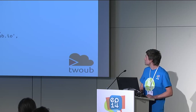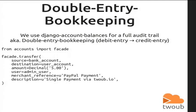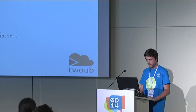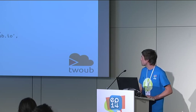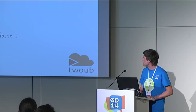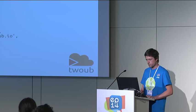Another useful component is double-entry bookkeeping: Django account balances. You have a full audit trail. You always have a debit entry and a credit entry, so you won't lose any money. It's pretty simple — you have to define a source (our bank account), the destination account, the user, the amount, and the user that is privileged to transfer the money.